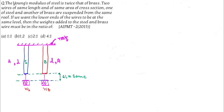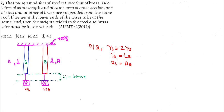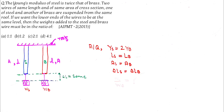According to the question, Young's modulus of steel is twice that of brass. Length of the steel rod equals length of the brass rod, area of cross section of the steel rod is also equal to that of the brass rod, and the extensions in both rods are also the same. We have to find W_s by W_b.